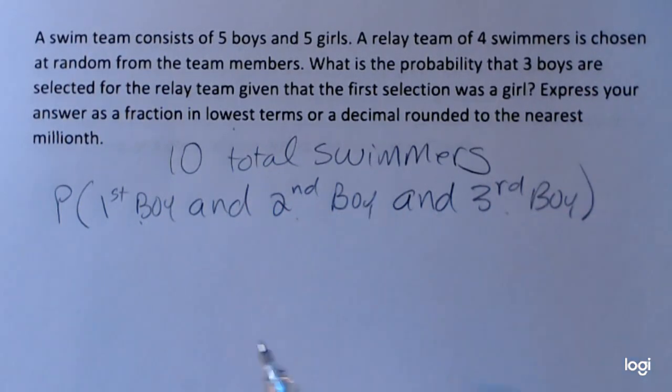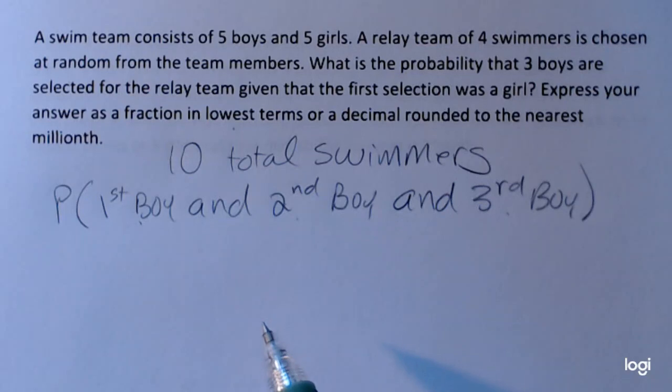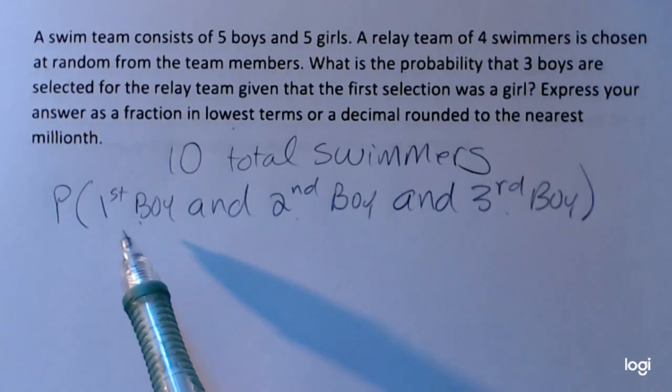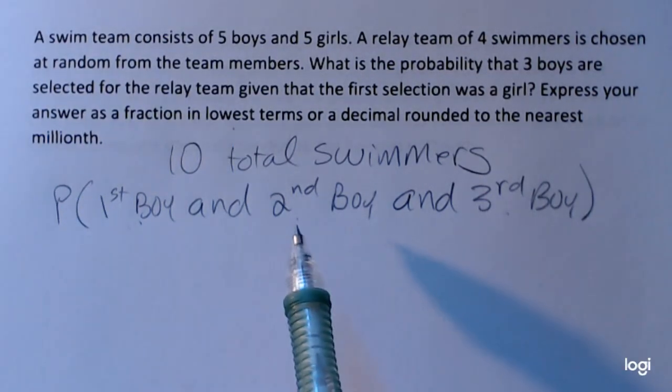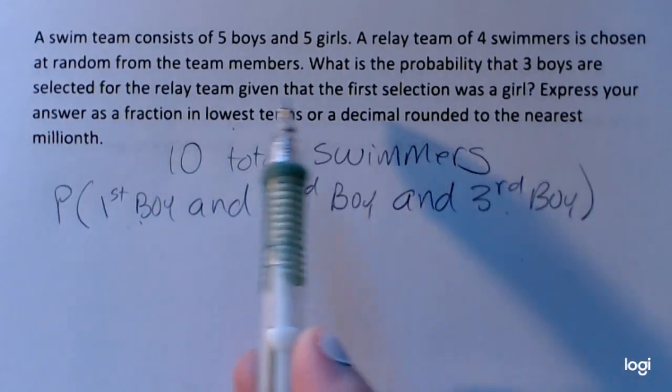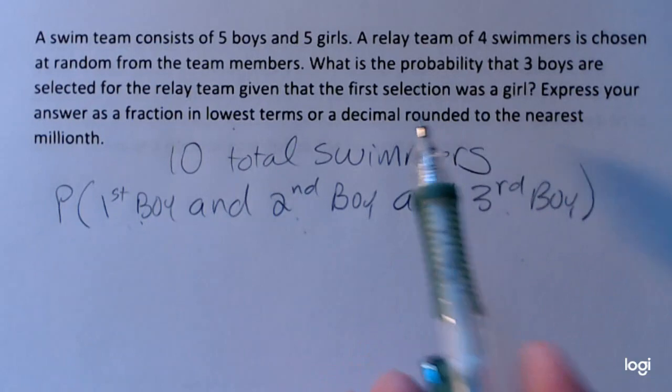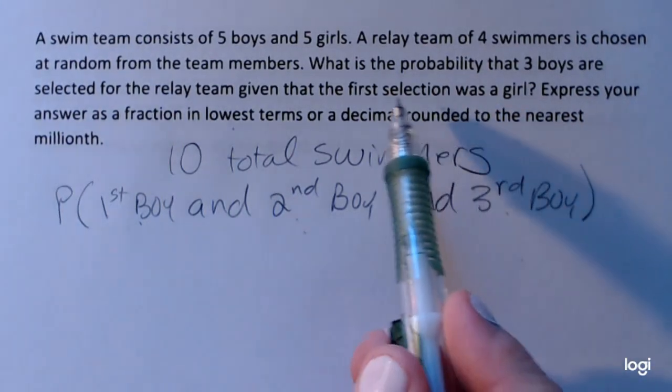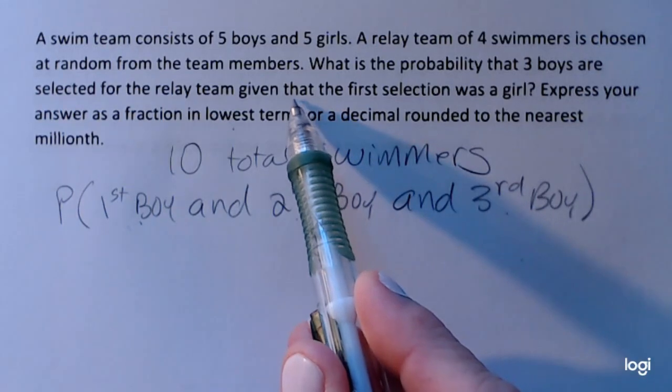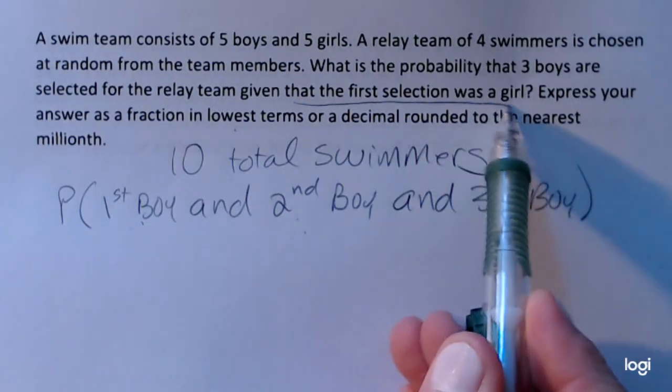So the and is applied in this problem. So I know, given that I do have an and type of problem, I will be multiplying. Now I don't want to multiply the probability I get a boy and then probability I get another boy and another boy because I have this initial restriction right here or condition. So the first selection was a girl.